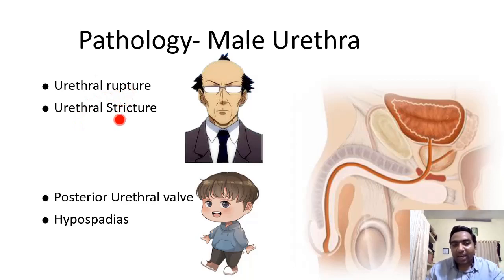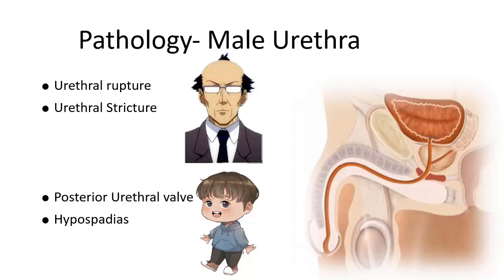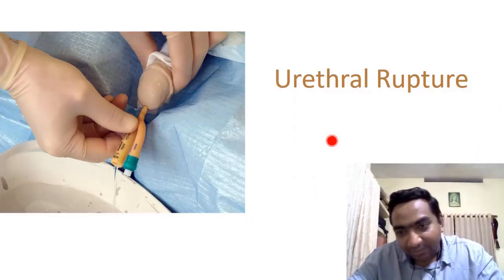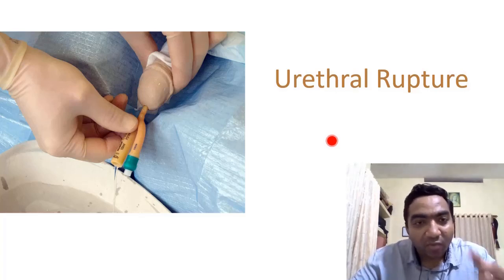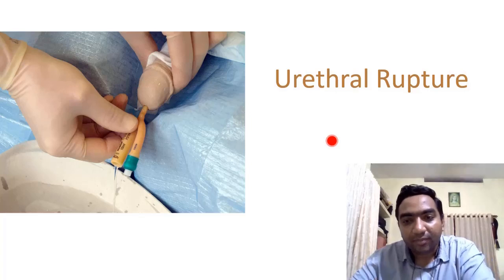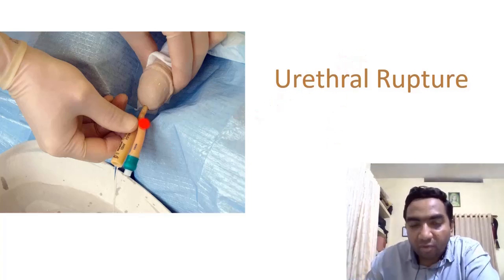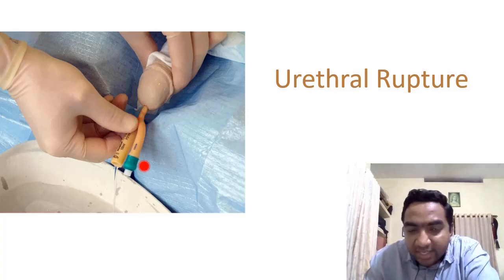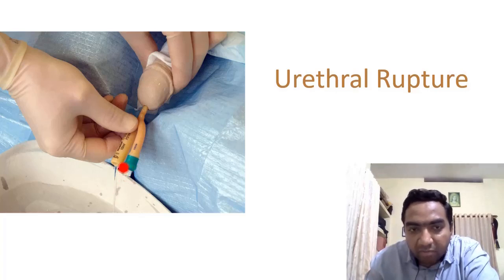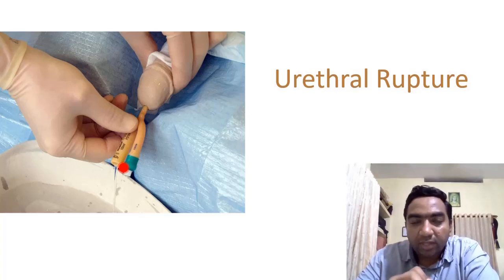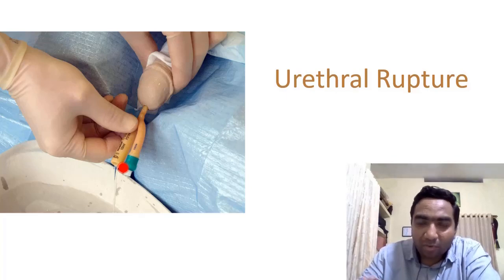Urethral rupture is close to our heart because there is a high chance we can cause one during our house jobs. During Foley's catheterization, if we are not careful, we can produce a urethral rupture. To avoid this, always insert the catheter until the Y-junction and make sure that urine is coming out through the Foley's catheter before inflating the bulb. However, iatrogenic catheterization is not the most common cause of urethral rupture — the most common cause is trauma.